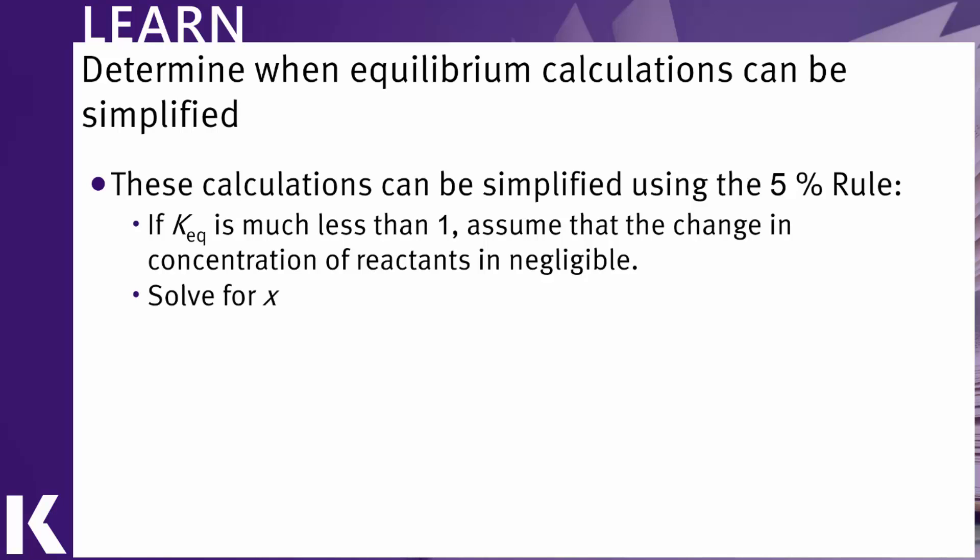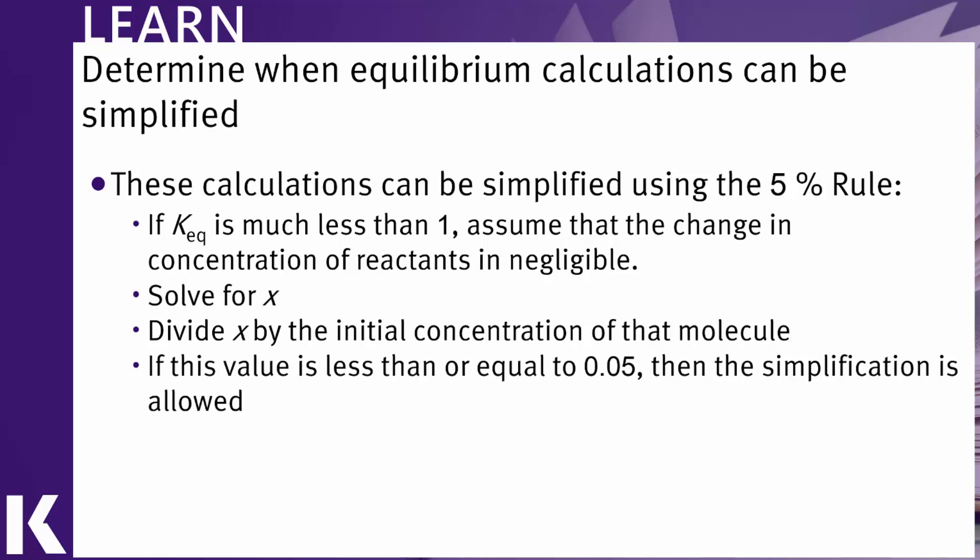So what you do is you go ahead and solve for X, solve for the equilibrium concentration, divide X by the initial concentration of that molecule, and then look for the answer to that calculation and see if that answer is less than or equal to 0.05 or 5%. If it is, then you're on safe ground by using the simplification.